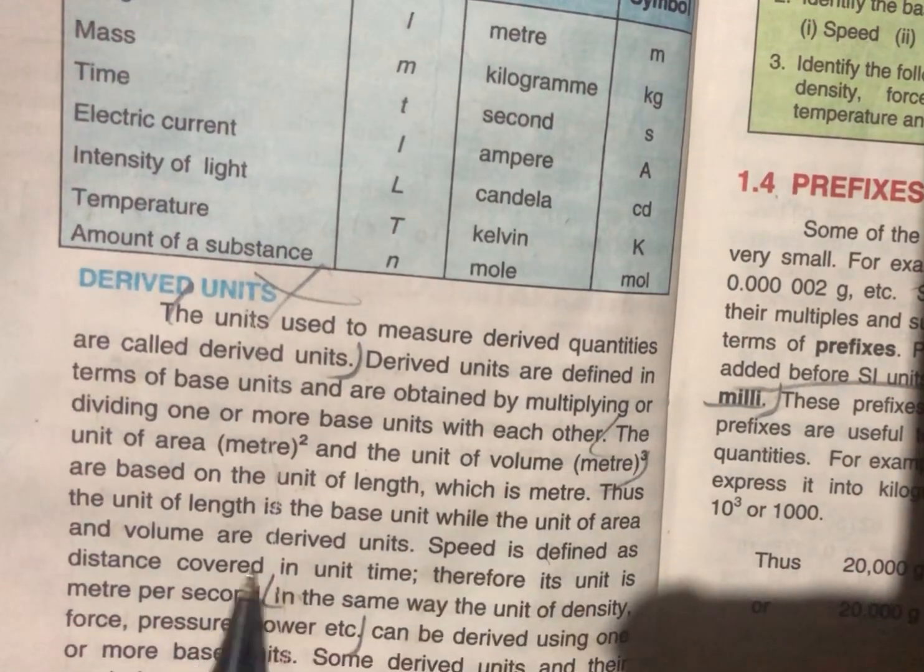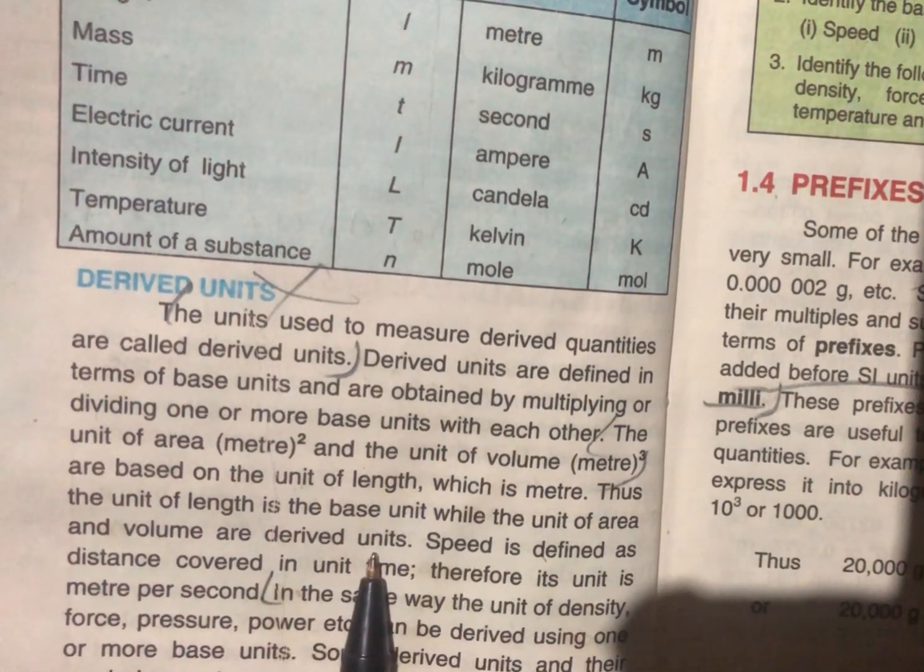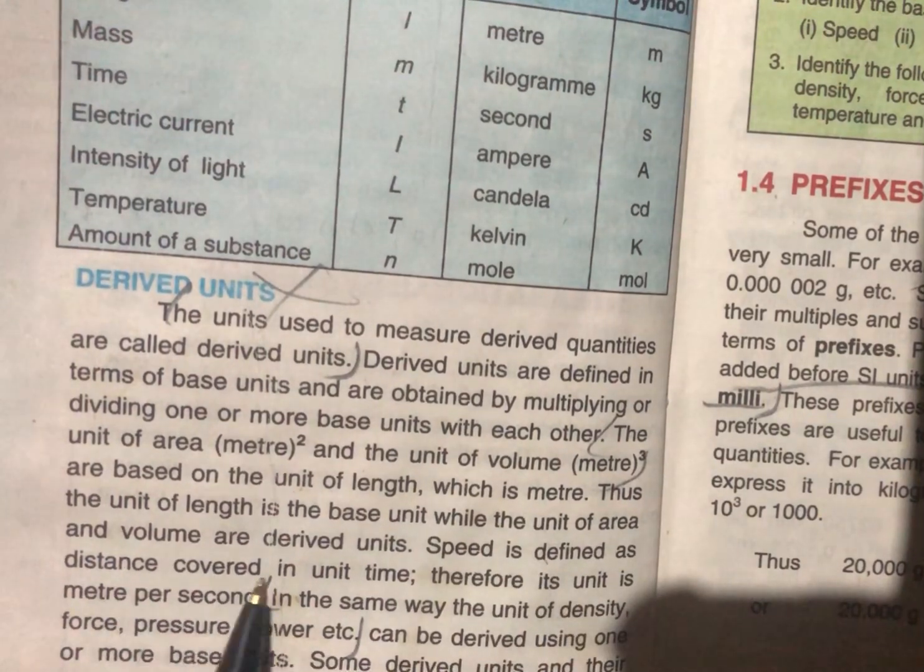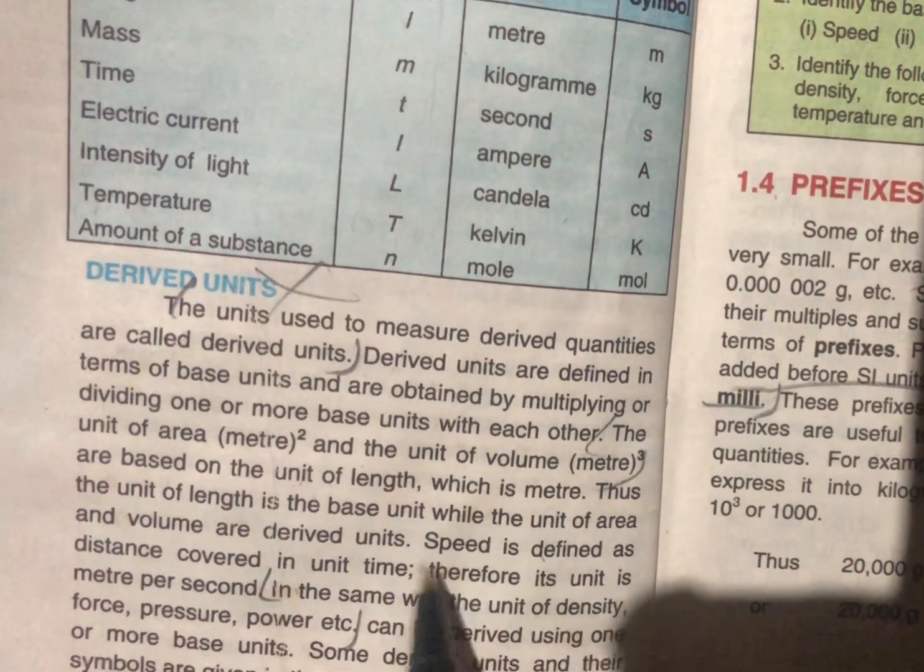This is the base unit, but when we derive meter square and meter cube, it is the derived unit. Speed is defined as the distance covered in unit time.